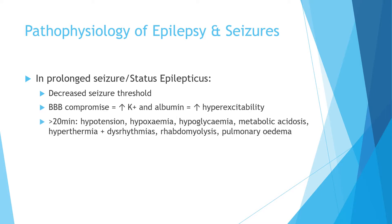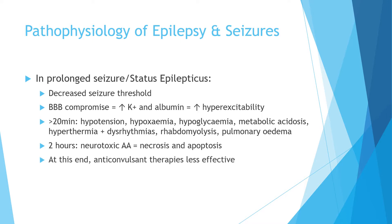After about 20 minutes of seizure activity, we begin to see hypotension, hypoxemia, hypoglycemia, metabolic acidosis, and hypothermia, as well as dysrhythmias, rhabdomyolysis, and even pulmonary oedema. After about two hours, neurotoxic amino acids cause neuronal necrosis and apoptosis. Due to the hyperexcitability at this stage, anticonvulsant therapies also become less effective, making control of seizure activity even more difficult.